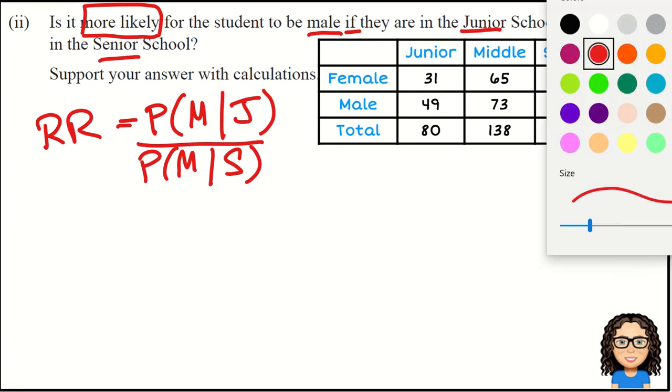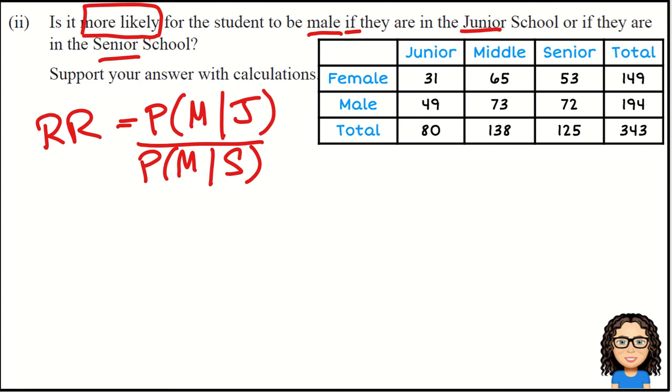Let's take these one piece at a time. The first one, the probability of being male given that we're in the junior school. If I just look at the junior school numbers, we've got 80 students in the junior school of which 49 are male. So the probability of being male given junior is 49 out of 80.